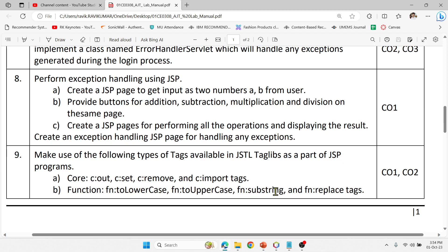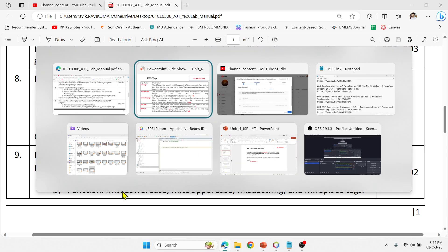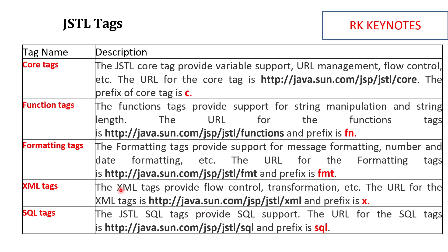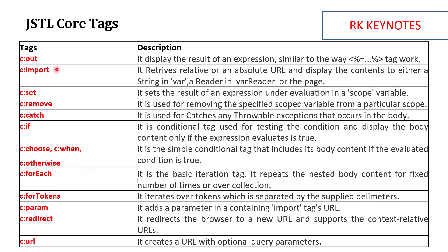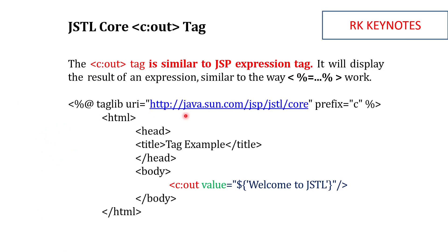For function tags the prefix is 'fn', and you can see tags related to string operations like lowercase, uppercase, and substring. Here is the full core tag list: c:out to display results, c:import to import a URL or package, c:remove to remove a stored value, c:forEach as a simplified for-loop, c:param from previous videos, and c:redirect to redirect the user.